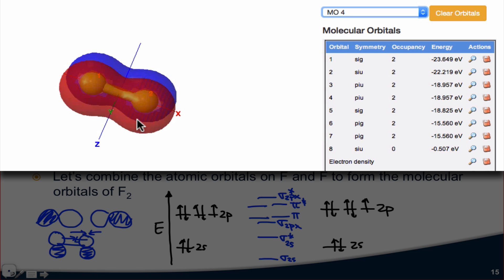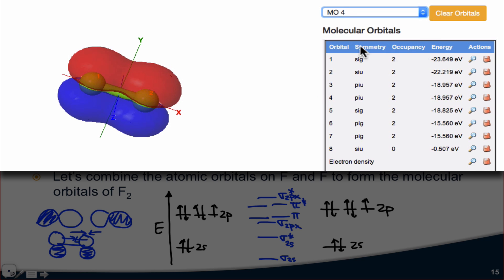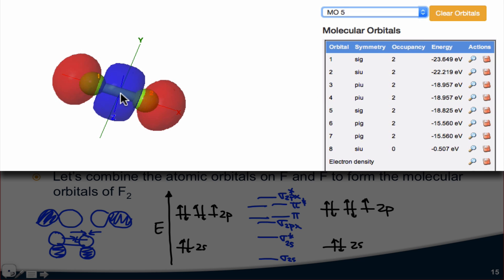MO4 is an equivalent pi orbital, just in a different direction. If I leave this fixed, notice that MO3 is at right angles to MO4. Molecular orbital 5 is the sigma orbital formed from overlap of the px orbitals. Notice that the p orbitals are aligned along the x-axis. When they overlap, we get this molecular orbital.